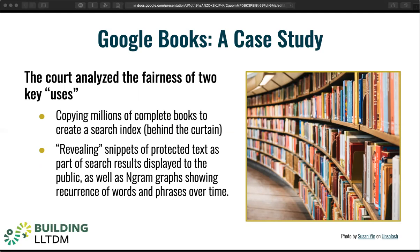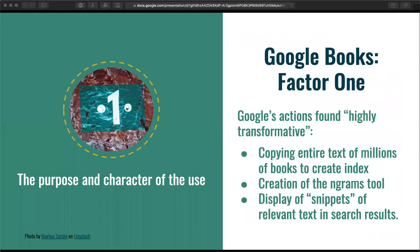For TDM researchers, it's important to look at the two key uses that the court was evaluating in this case. Comparing your activities to the ones analyzed here will be extremely helpful as you figure out how fair use might apply to your work. The uses in the Google Books case were: one, copying millions of complete in-copyright books to create the search index; and two, displaying snippets of in-copyright text as search results to users in the public and as part of n-gram graphs showing the frequency of words and phrases in the corpus over time. These two practices — compiling works into a machine-readable corpus and revealing relevant portions of the corpus to the public to substantiate or instantiate the results of machine analysis — are likely to recur in many TDM projects.